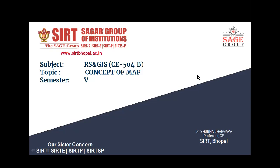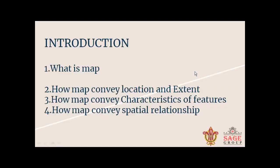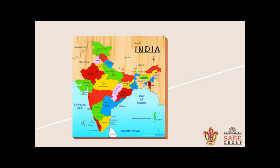Basically, a map is a representation of the physical features of a position or portion, particularly of the earth's surface. As for map making, it started long back in the stone ages. In the last quarter of the 20th century, the computer replaced the cartography area, and maps are now mainly prepared by computer.